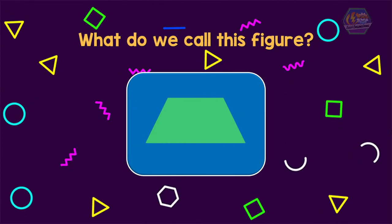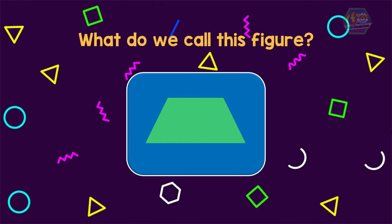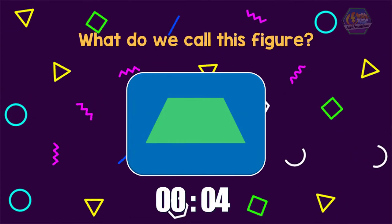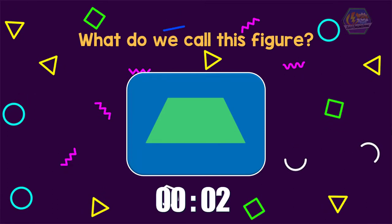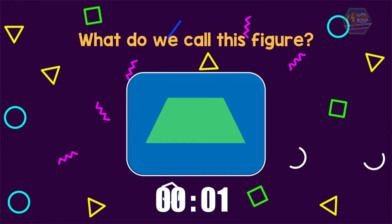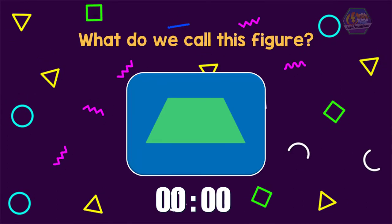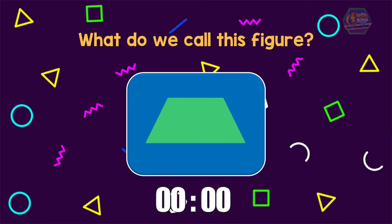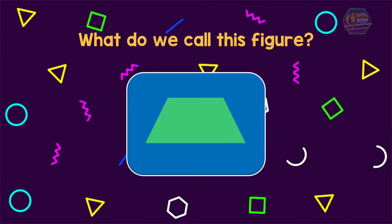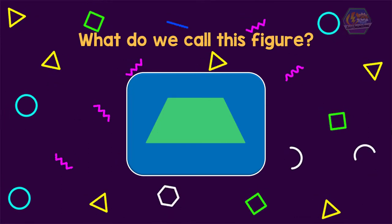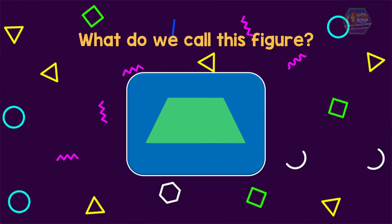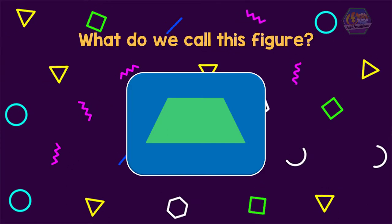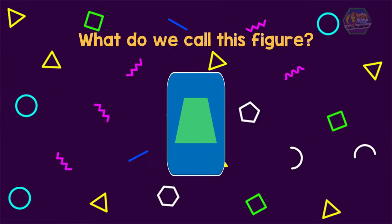What do we call this figure? It is a quadrilateral that has one pair of parallel sides, so we call it a trapezoid.